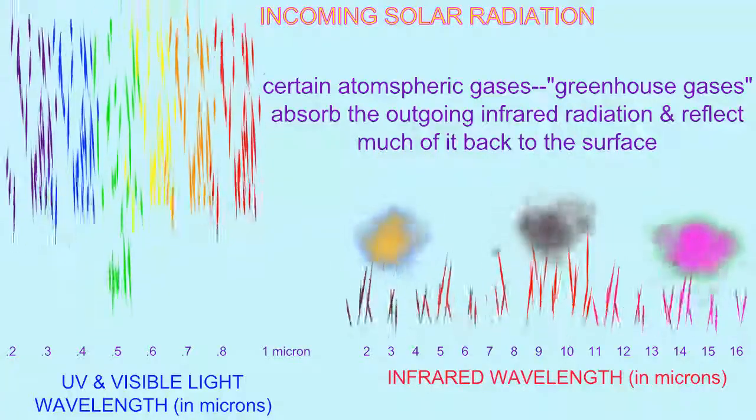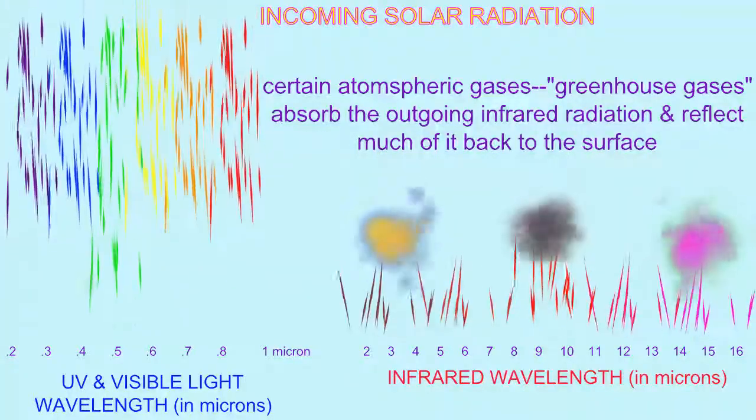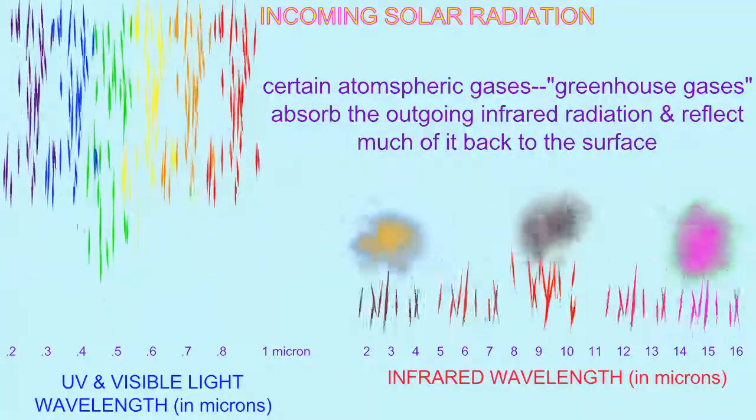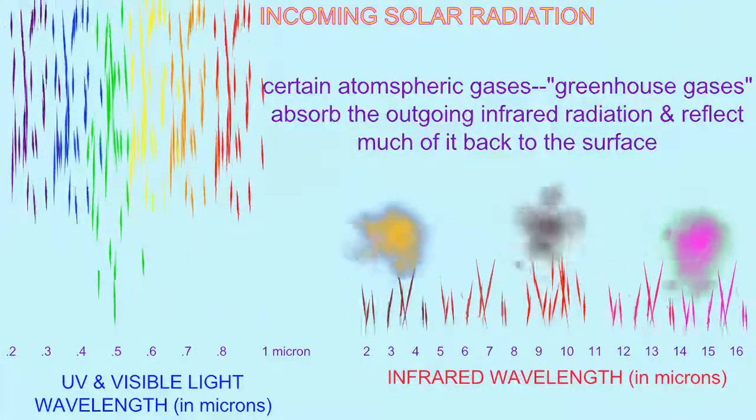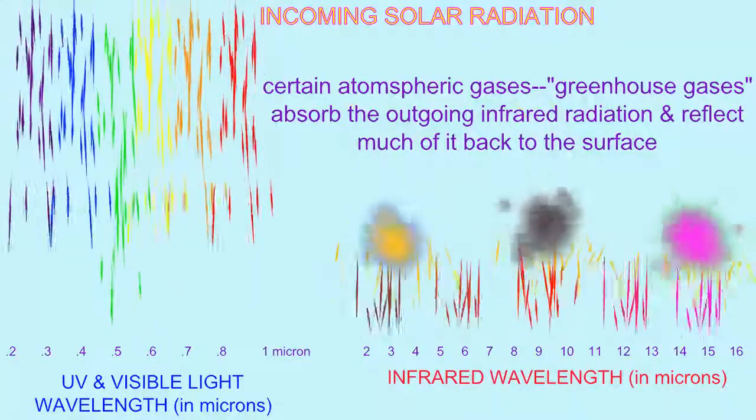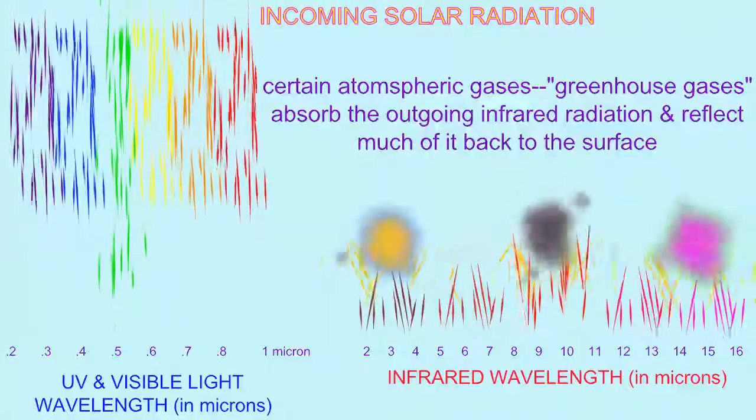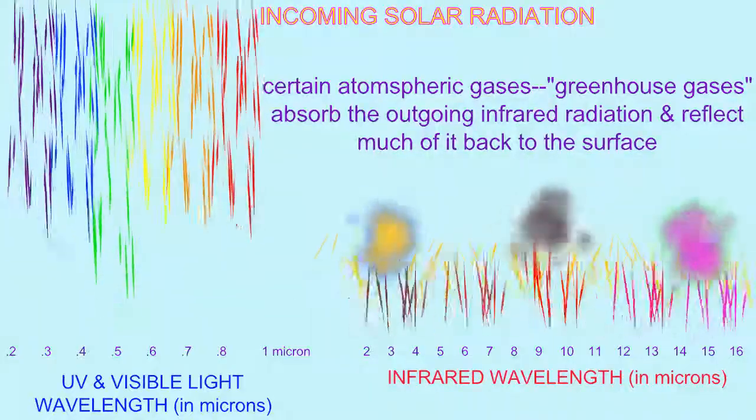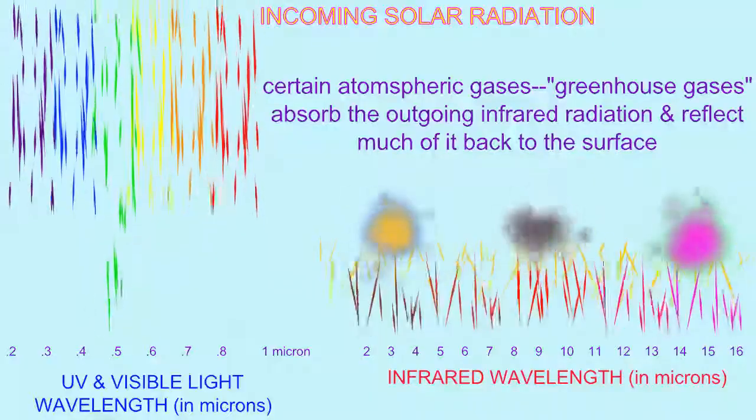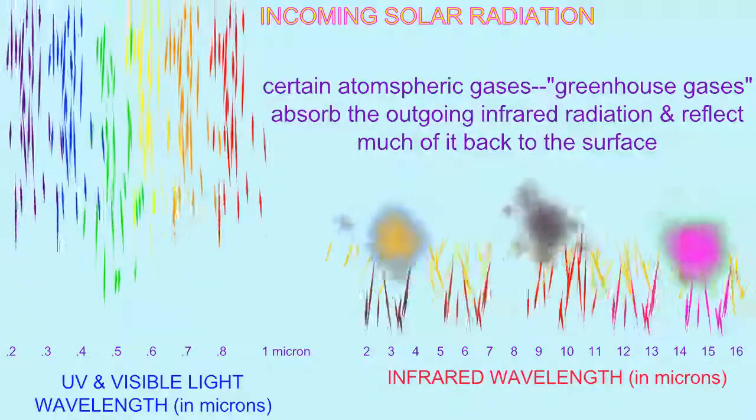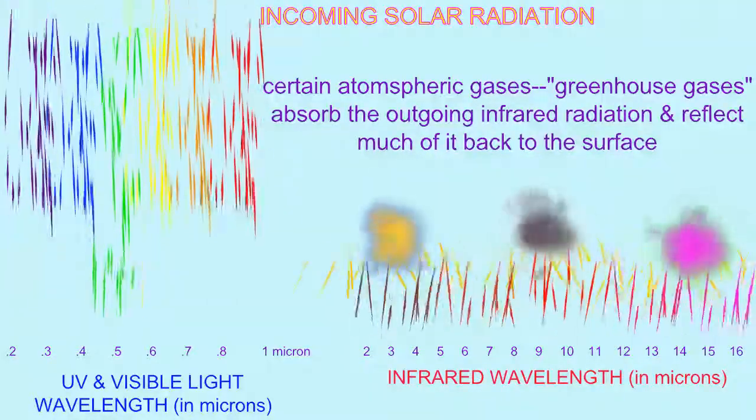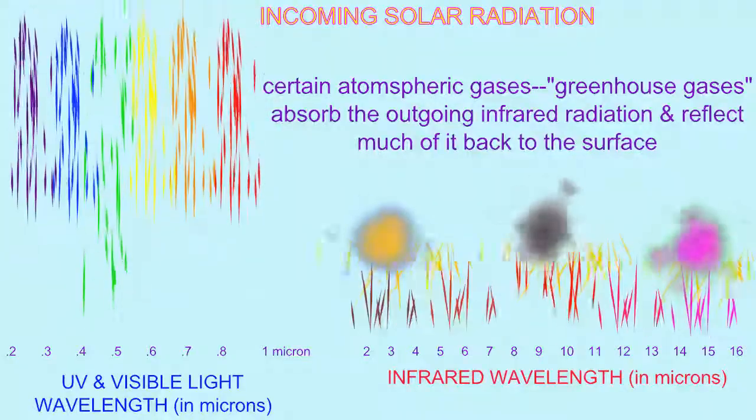There are greenhouse gases in the atmosphere which absorb some of this outgoing energy so that it does not radiate into space, and as it is randomly re-dispersed in the atmosphere, some of it makes it back to Earth where it warms the planet. Ninety percent of the outgoing thermal radiation is reabsorbed by greenhouse gases, and life on Earth depends on this.